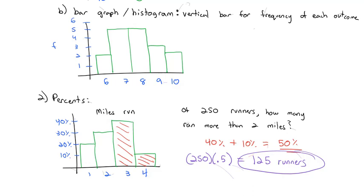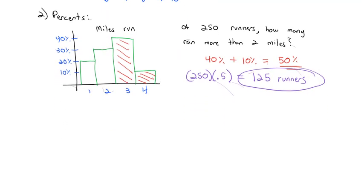While occasionally we show percents in histograms or bar graphs, it's probably more common to see percents actually drawn visually in another type of chart called a pie chart. A pie chart shows percentages in each category.